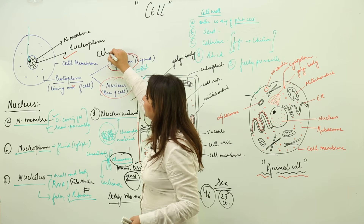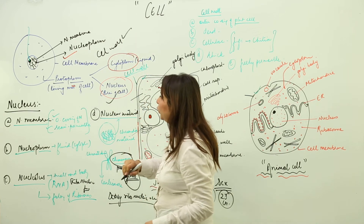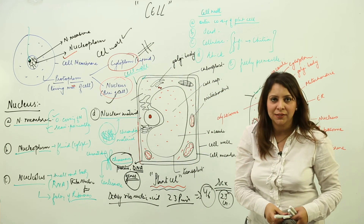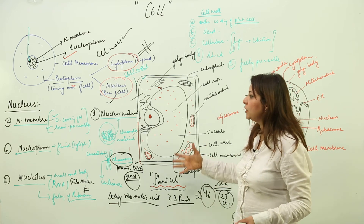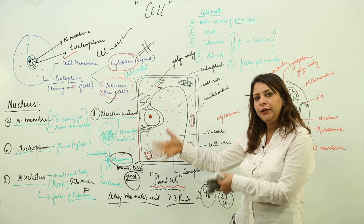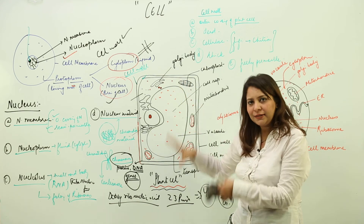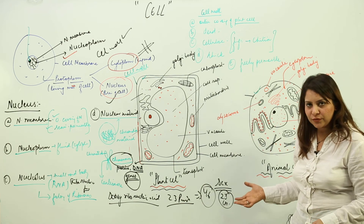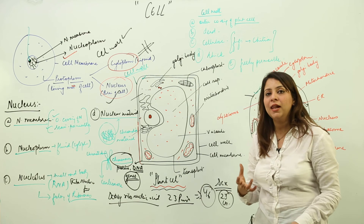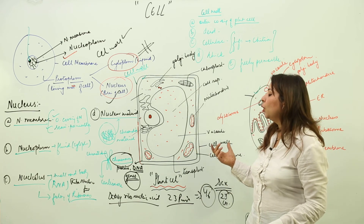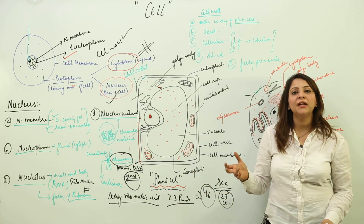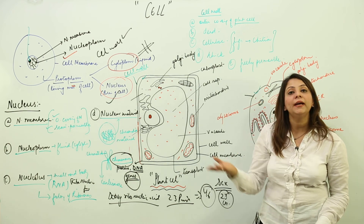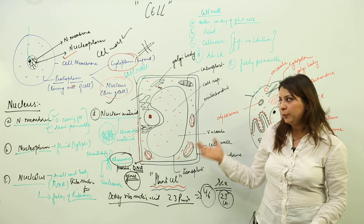We have now covered cell membrane, cell wall, and nucleus. Next, we will study the cytoplasm and the organelles it contains — what they are and how they help the cell. In the meantime, practice drawing the plant cell and animal cell, as questions may be asked about them.